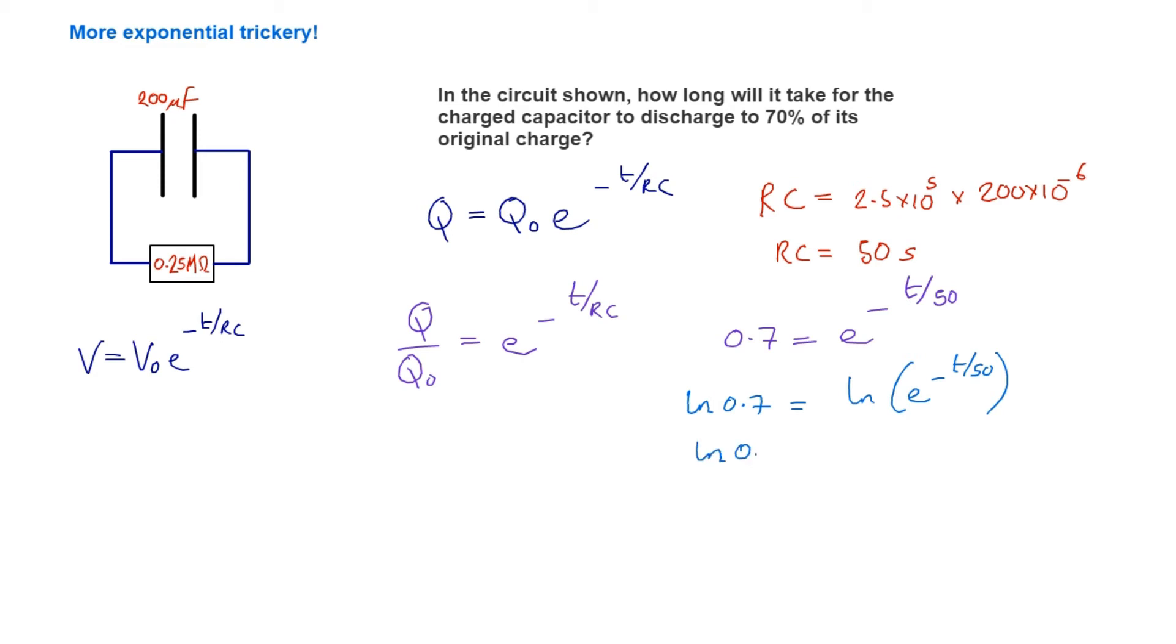So we get ln(0.7) = -t/50. We can rearrange and say,